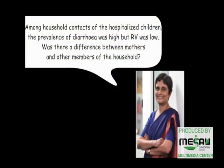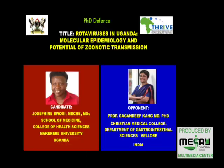The second question is: among household contacts of the hospitalized children, the prevalence of rotavirus was low. Was there a difference between mothers and other household members? Among the household contacts of the children, the prevalence was not high — actually, we had no rotavirus in those household contacts. There was no rotavirus in the household contacts of the children who were having rotavirus diarrhea.